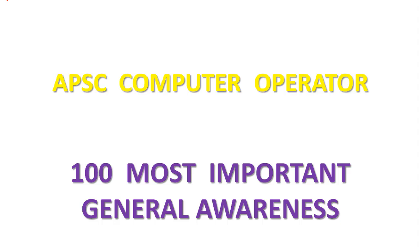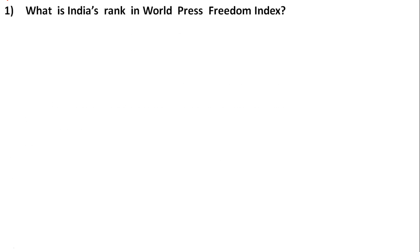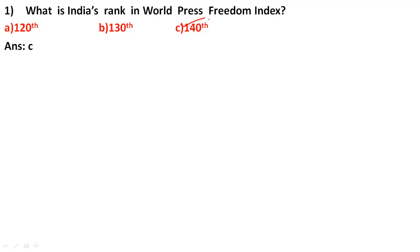What is India's rank in the World Press Freedom Index? I am going to show you questions from the last six months. Let's see what the answer is. India's rank in the World Press Freedom Index — the correct answer is option C: 148.